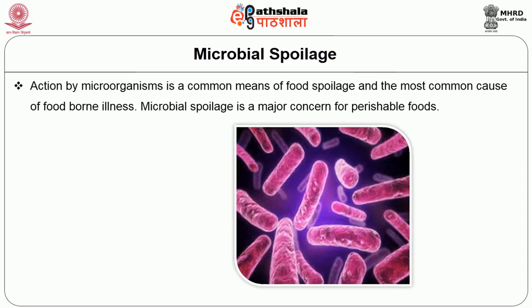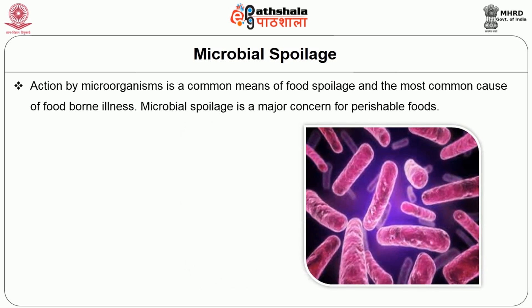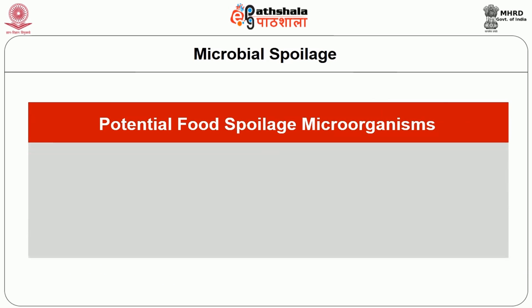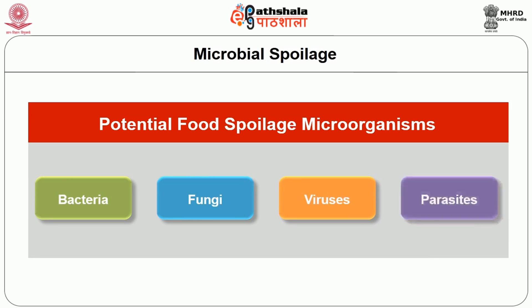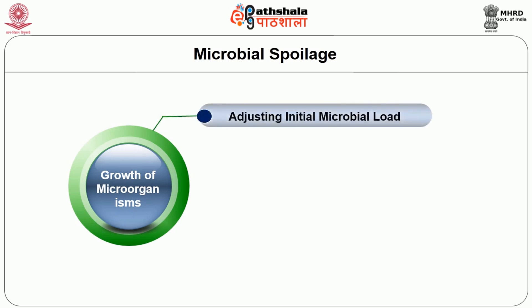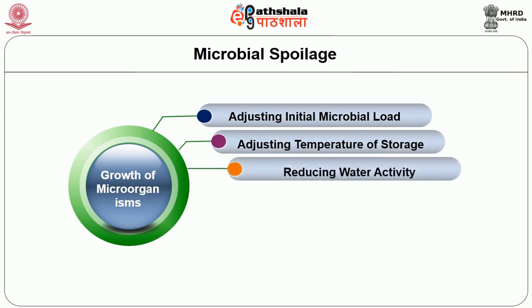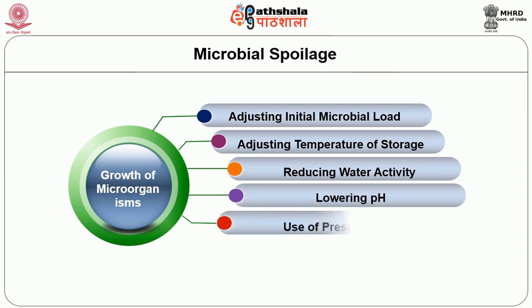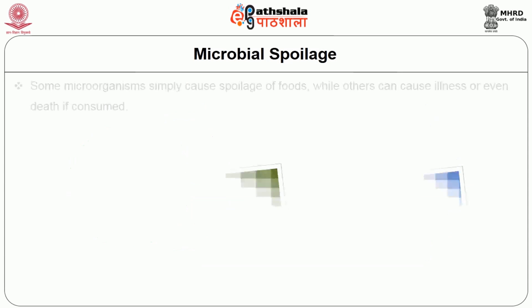Action by microorganisms is a common means of food spoilage and the most common cause of foodborne illness. Microbial spoilage is a major concern for perishable foods such as fresh fruits, vegetables, meats, poultry, fish, and bakery products. Potential food spoilage microorganisms include bacteria, fungi, viruses, and parasites. The growth of most microorganisms can be prevented or slowed by adjusting initial microbial load, adjusting temperature of storage, reducing water activity, lowering pH, use of preservatives, and using proper packaging. Some microorganisms simply cause spoilage of foods, while others can cause illness or even death if consumed.